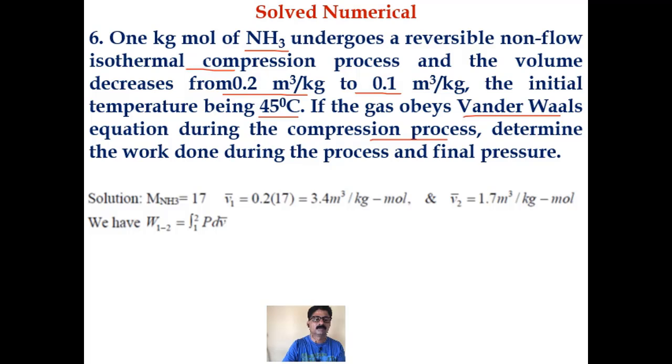Let us note down the molecular weight of ammonia as 17. N is 14, H3 is 3, so 17. V1 bar, initial volume per mole, is 0.2 times 17, so that is 3.4 cubic meters per kg-mole. And V2 bar is 1.7 cubic meters per kg-mole. As all of you know, the work done W1-2 is given by integration 1 to 2 P dV bar.